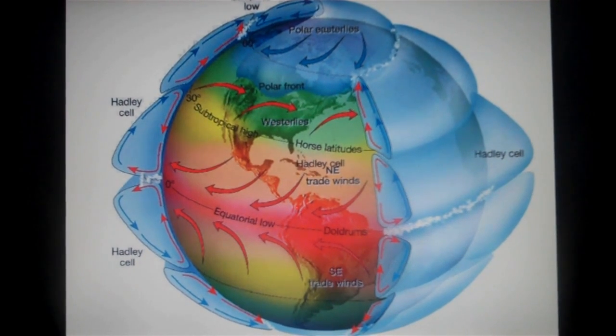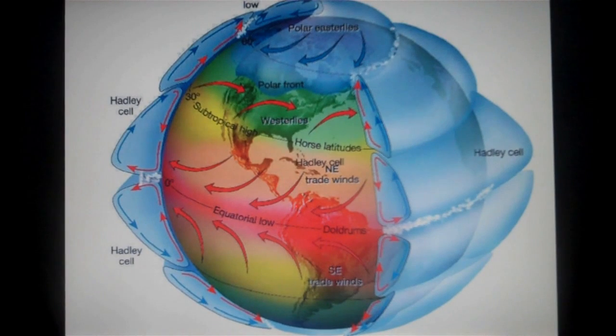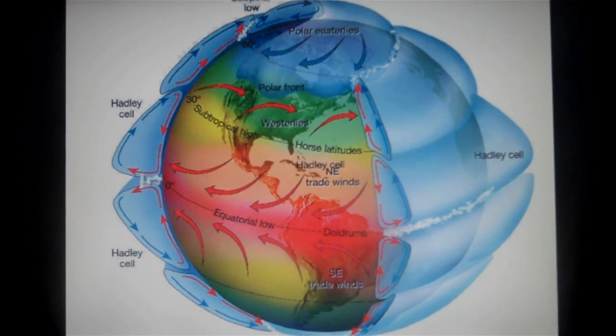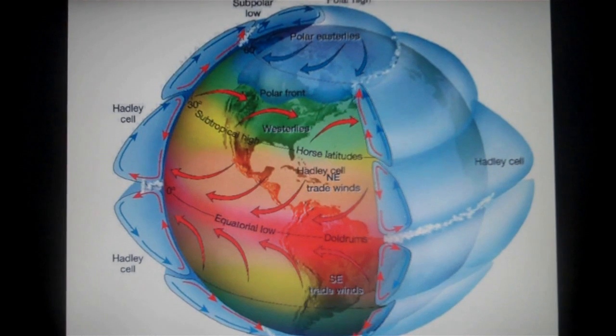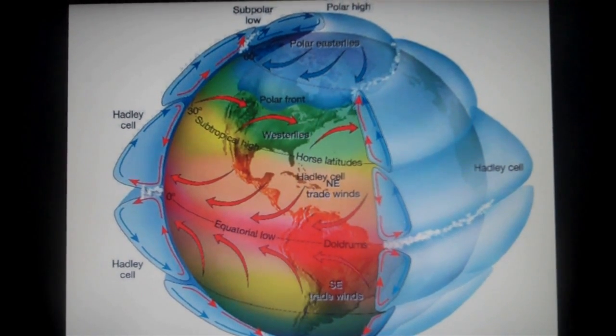This is known as thermally indirect because the rising air at 60 degrees is colder than the falling air at 30 degrees. But this is created because the air which is coming from the poles is colder than the air which is rising at 60 degrees latitude, allowing for this air to rise.